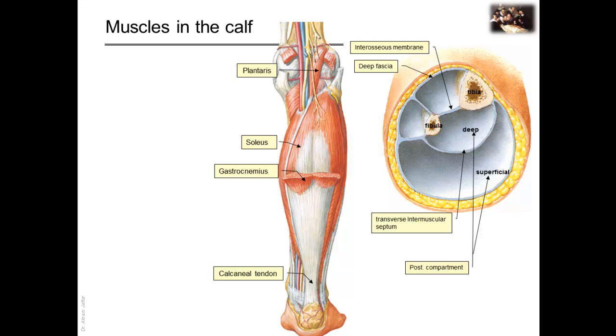Soleus, gastrocnemius, and plantaris are collectively called the triceps surae since they have a common insertion via the calcaneal tendon into the calcaneus. Please remember that soleus is not related to the sole and that its name is derived from its shape, which looks like a flat sole fish.